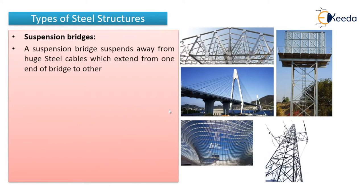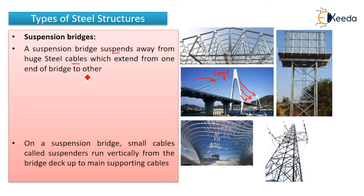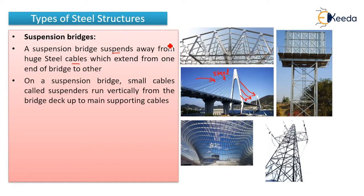The next structure is suspension bridges. A suspension bridge is suspended from huge steel cables. These cables are steel members with very high tensile strength; they take the load of the bridge deck. Steel cables extend from one end to the other. Small cables called suspenders run vertically from the bridge deck to the main supporting cable.